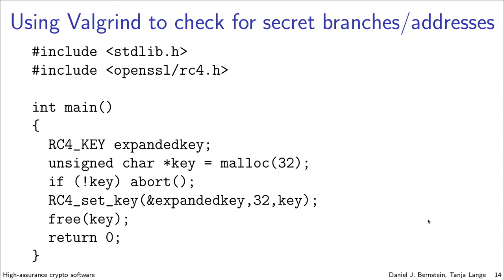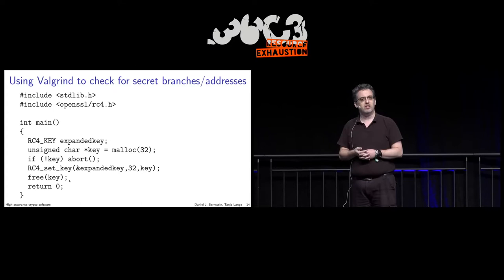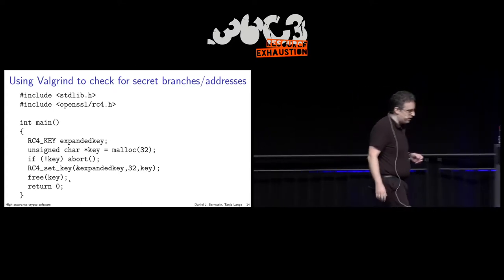We'll encrypt with RC4. You can see there's maybe a key, memory allocated for it, and so on. 32 is a fairly good key length. If there is no key, we get an error, and at the end we free our key. We initialized our key.